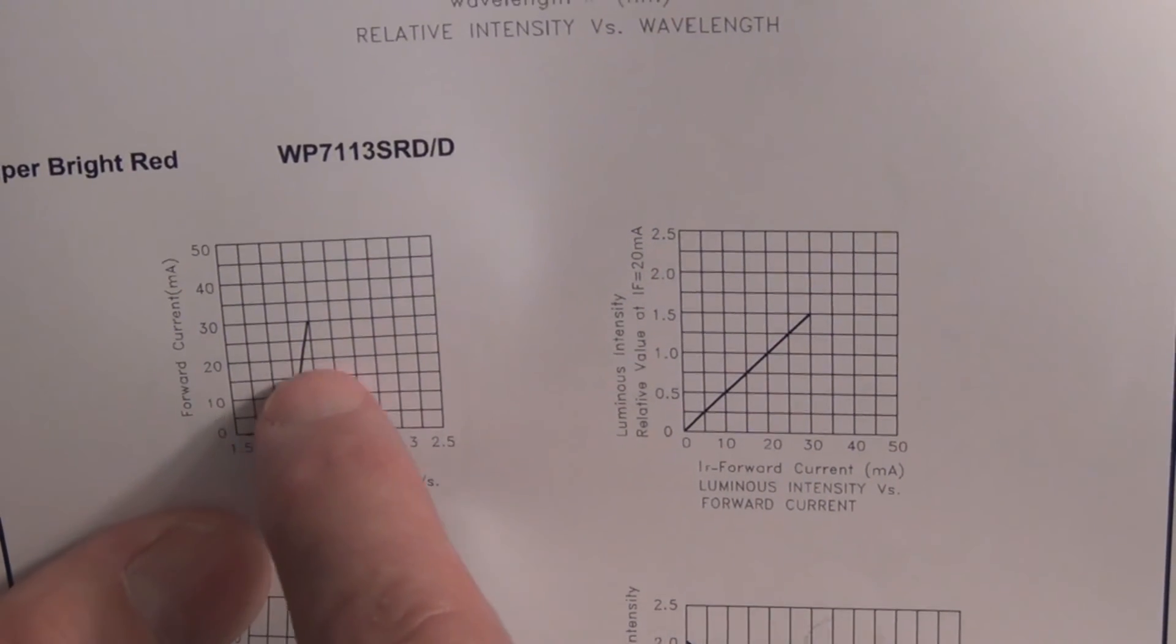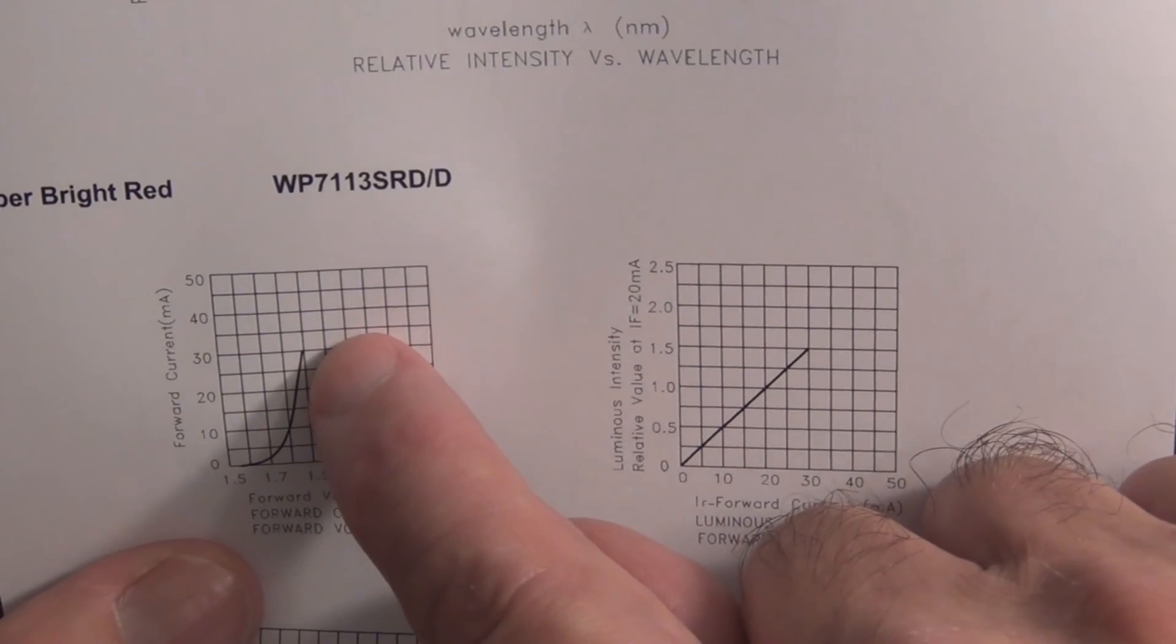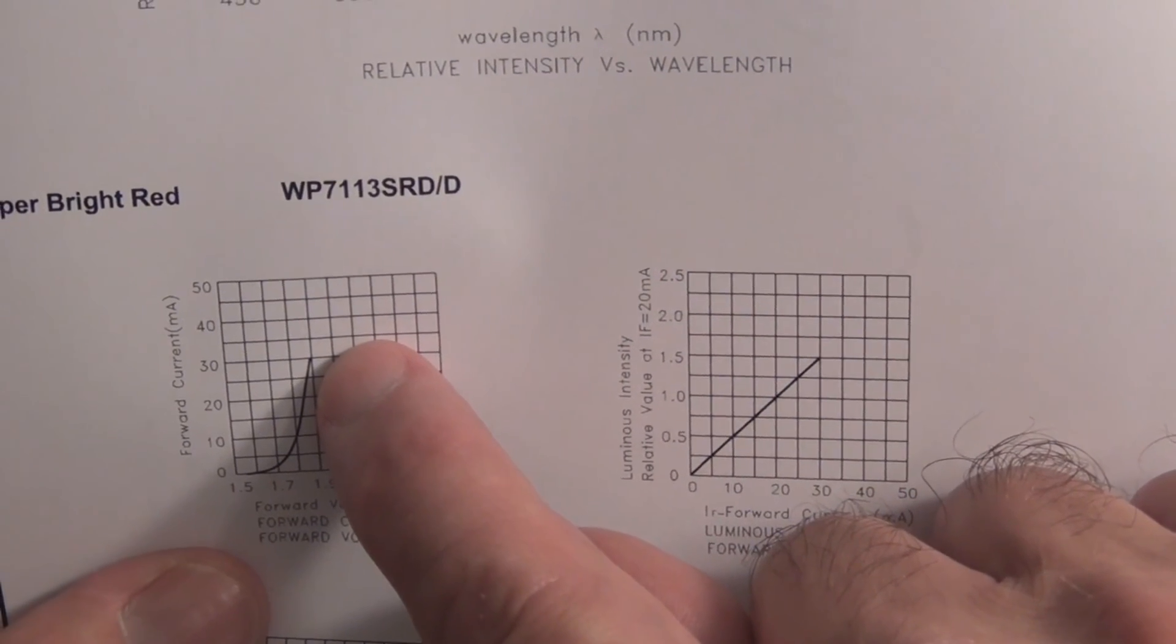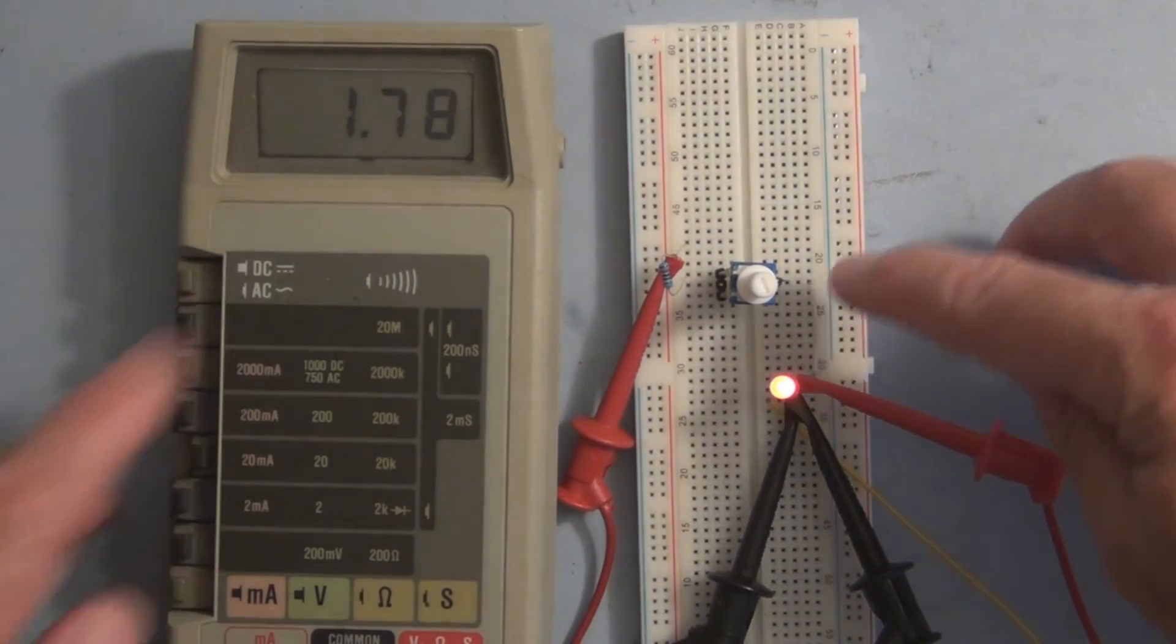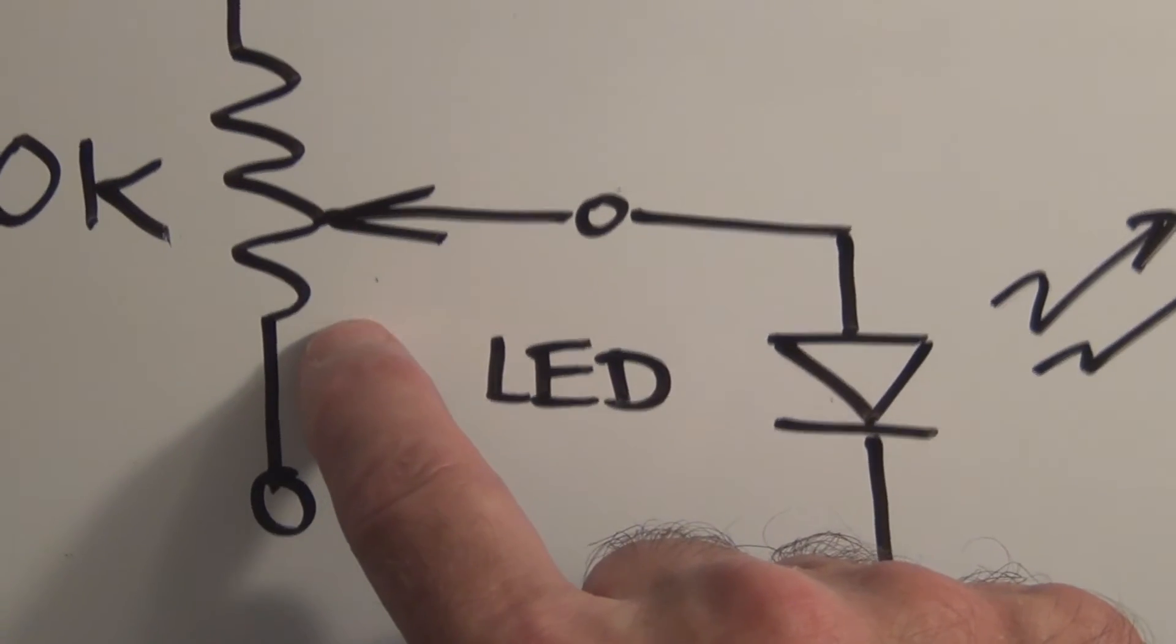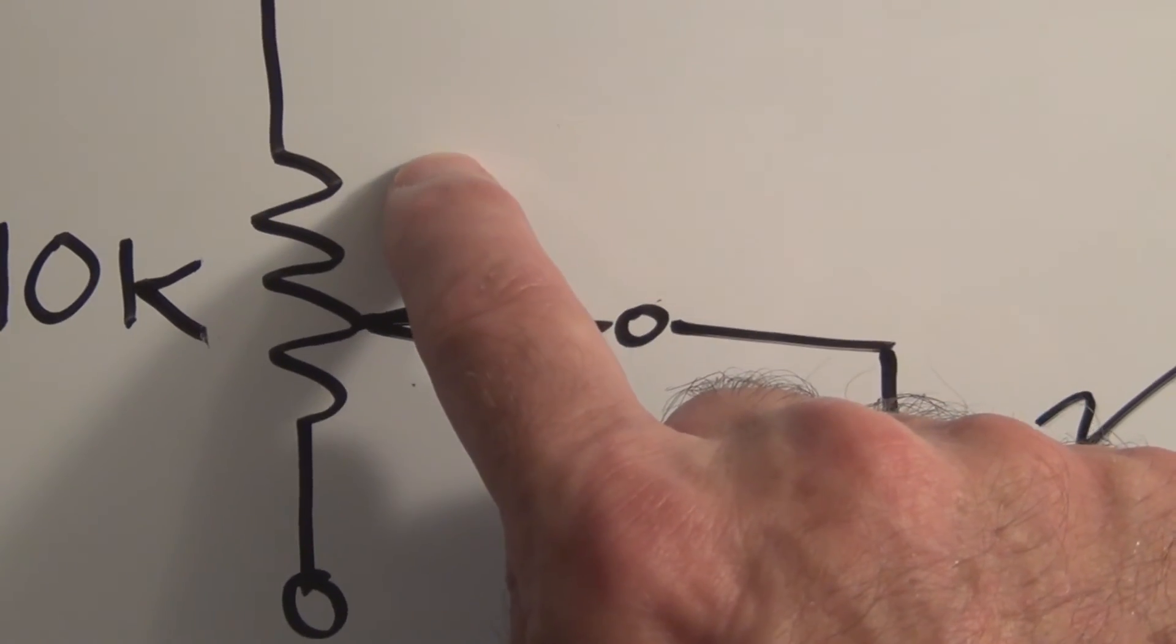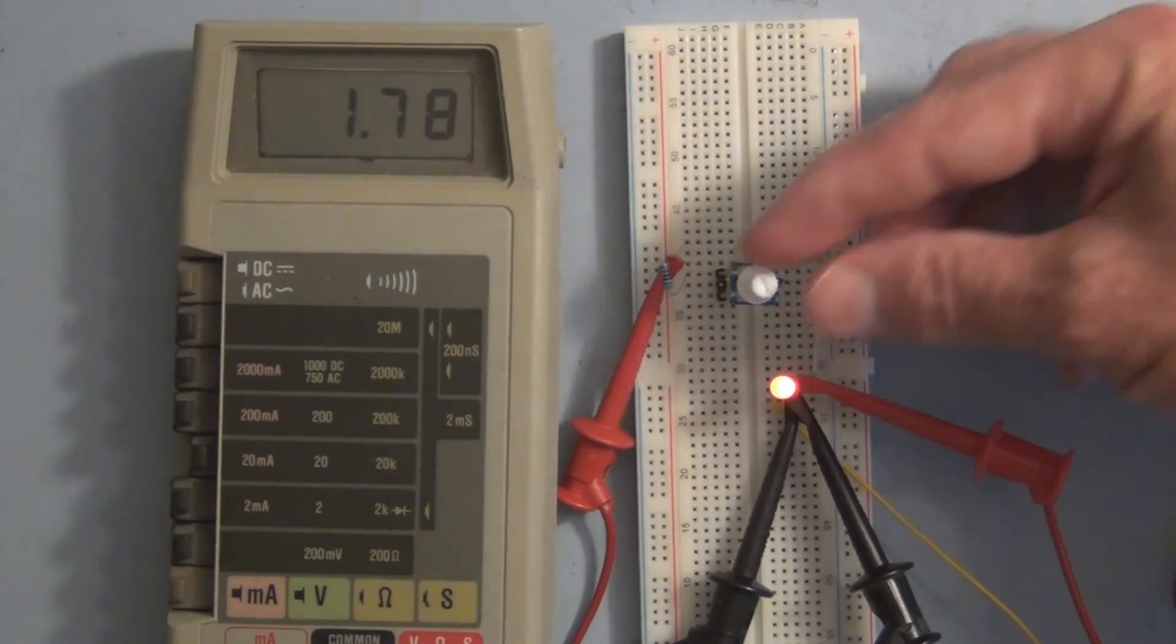As the wiper arm approaches the other end so it takes out the 10k completely, you'll see the LED start to really get bright. Now turning counterclockwise, you can see the voltage is starting to increase, 1.8.